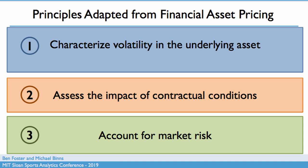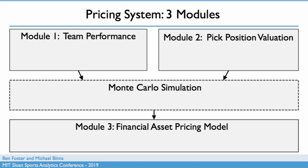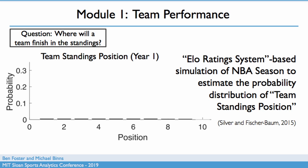These are the three principles we use: we first characterize the volatility in the underlying asset, then assess the impact of the contractual conditions — those are protections — and then account for market risk to boil that down into a single price. The first module is team simulation: where will a team finish in the standings? We model this using an ELO rating system-based model that simulates an NBA season, allowing us to estimate the probability distribution of the team's ultimate standings position. Bringing it back to the Lakers 2015 pick at the trade deadline: we simulate the remaining games for every NBA team 10,000 times and end up with a distribution of possible finishing positions for the Lakers.